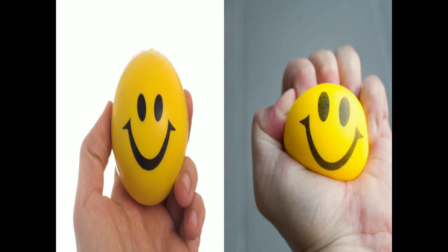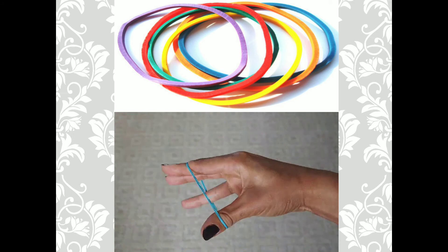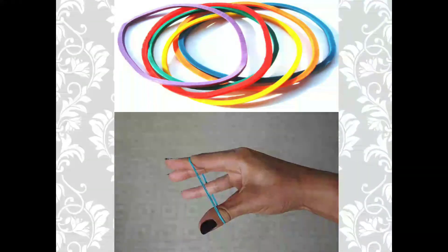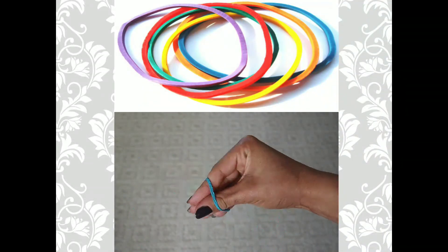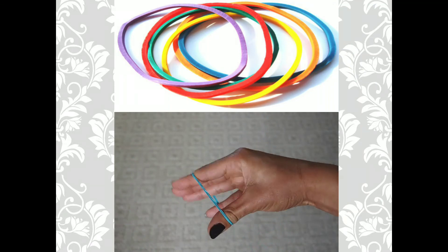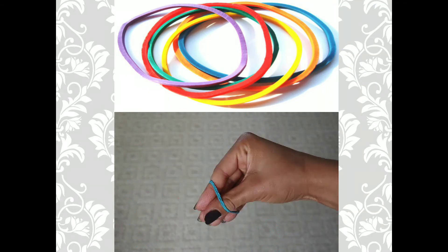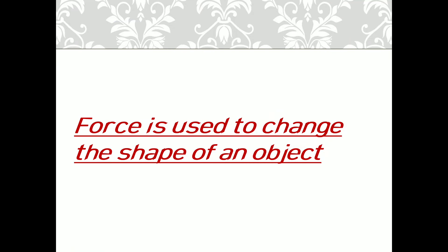What will happen if you press this ball with your hand? Yes, the shape of the ball will change, because you applied certain force on that ball and hence the shape changed. It is the same with rubber bands — when you apply certain force, that is when you pull the rubber band, the shape of the rubber band changes. Hence we can say that force is used to change the shape of an object.